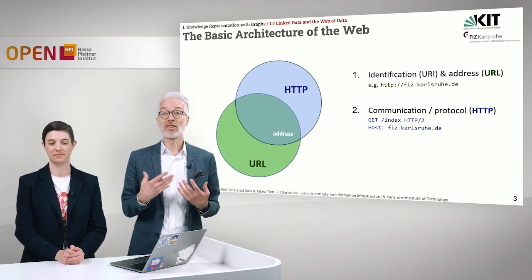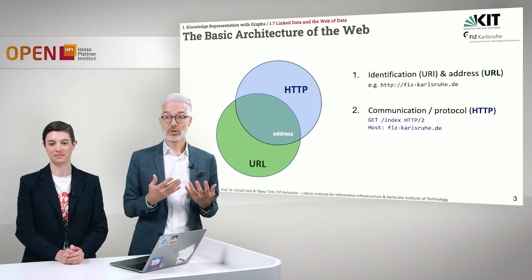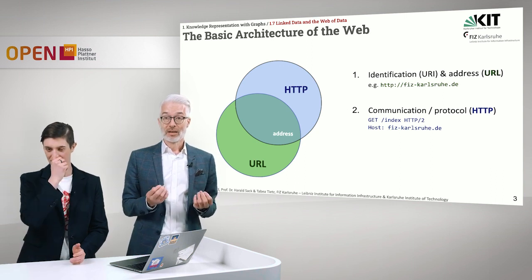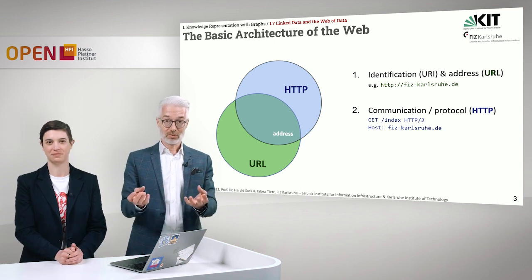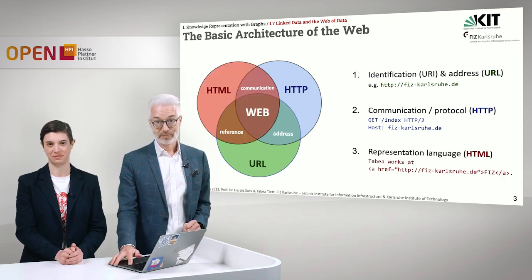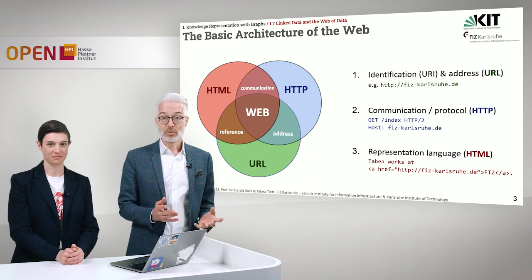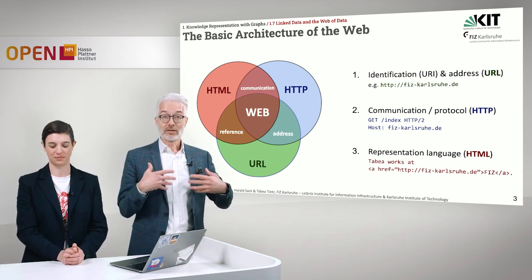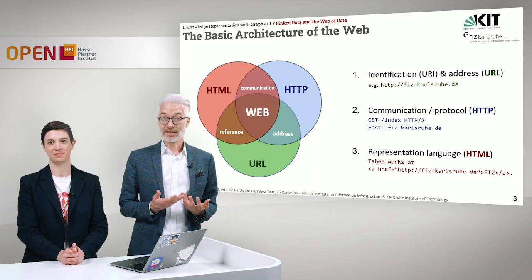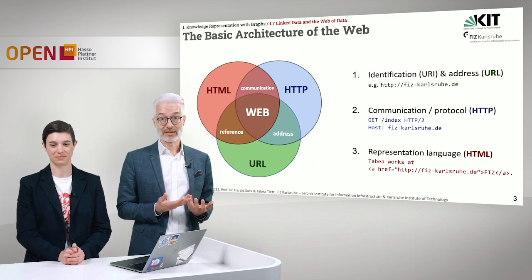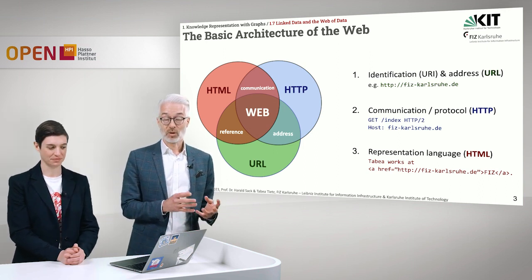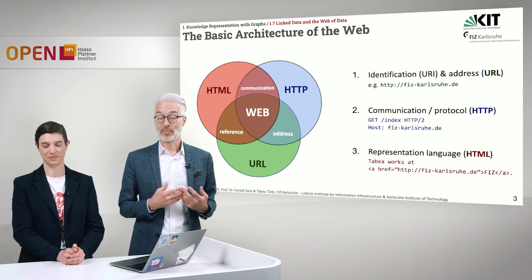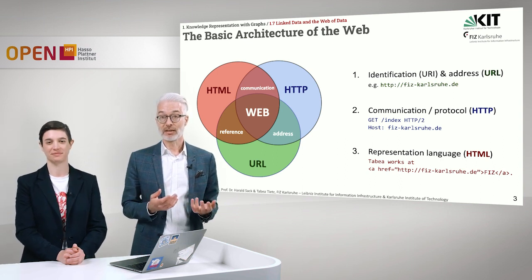You need an address to communicate things. As a communication protocol, HTTP delivers the information from a web server to a web client. And finally, what you need to encode and represent your information is HTML on the traditional web — the Hypertext Markup Language. With that, you can express something which is then rendered and displayed within a web page, as you see it in the browser.